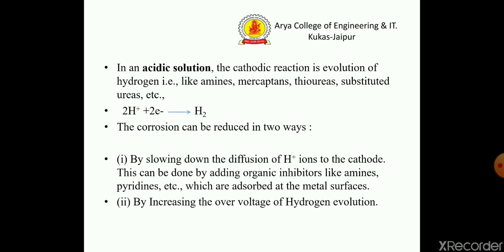In acidic medium, hydrogen ions are already present; they accept two electrons and are converted into hydrogen gas — that is why it is known as evolution of hydrogen. This corrosion can be reduced in two ways: first, by slowing down the diffusion of hydrogen ions to the cathode — this can be done by the addition of organic inhibitors like amines and pyridines, which are adsorbed at the metal surface; and second, by increasing the overvoltage of hydrogen evolution.